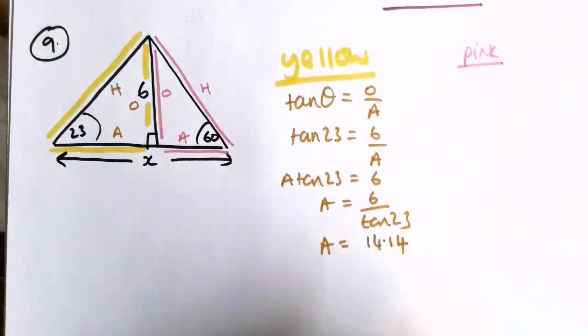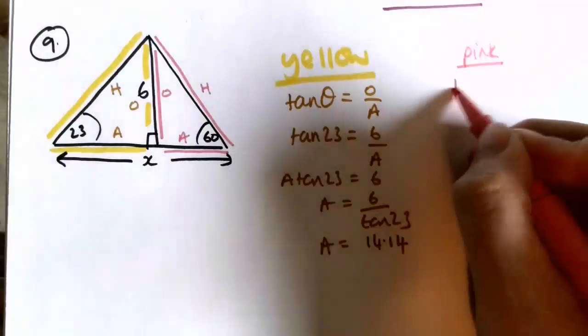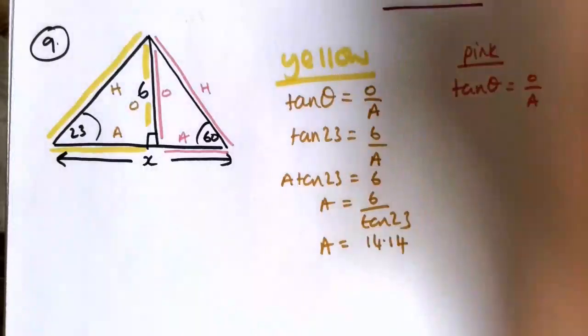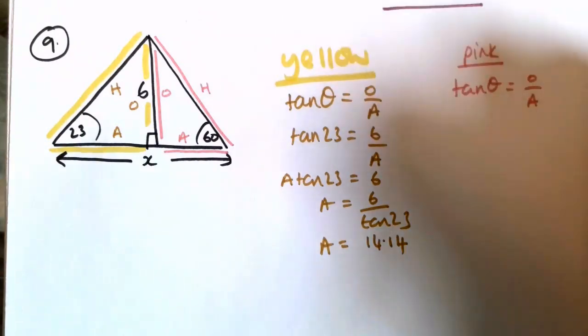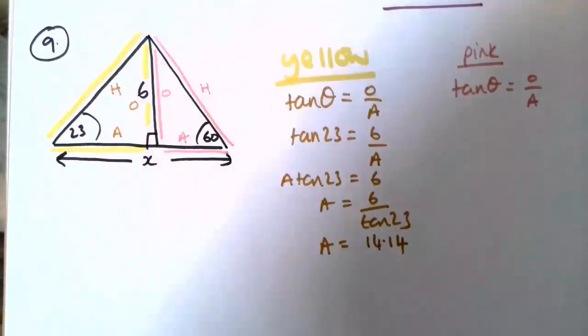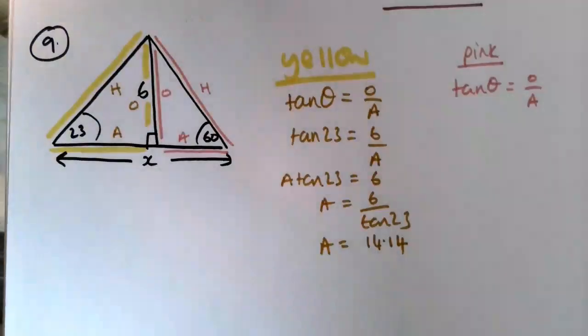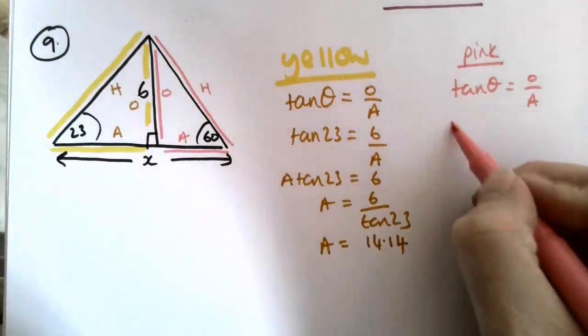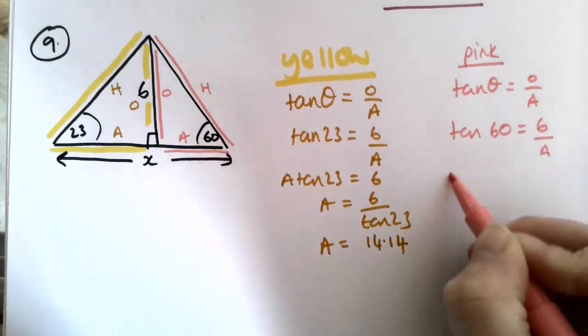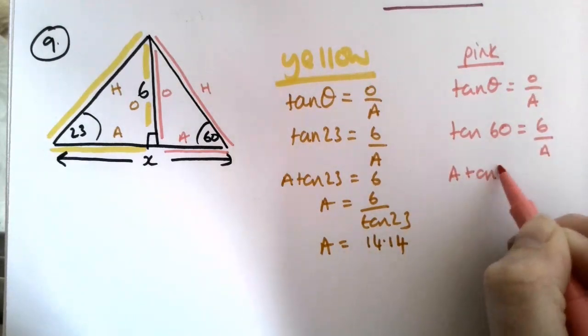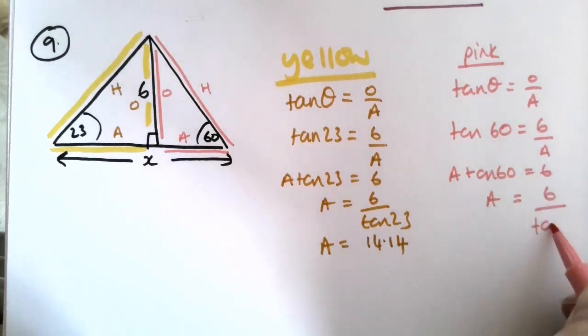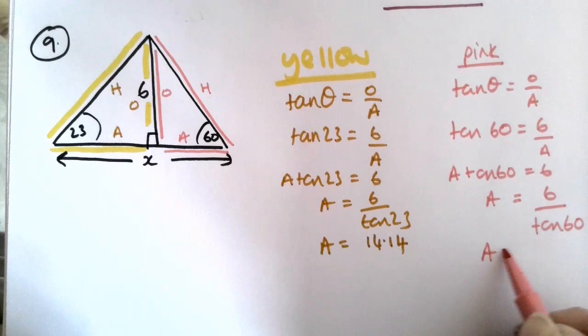So for this pink triangle we are still using tan, so tan theta equals O over A. Oh that lighting is horrendous. I'm going to try and hold that up. Right, so tan 60 equals 6 over A, so A tan 60 equals 6, so A is 6 over tan 60, which gets...